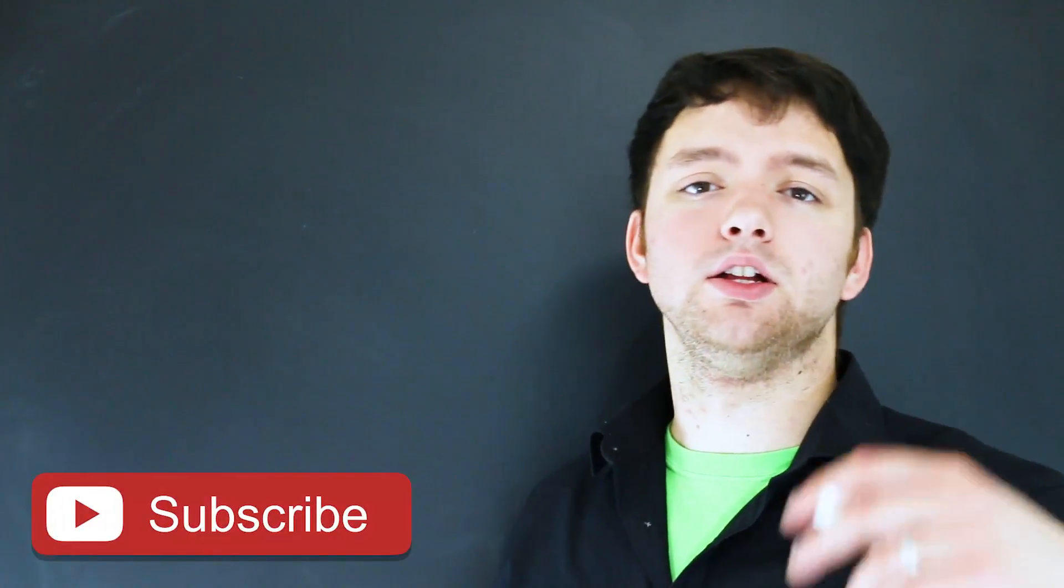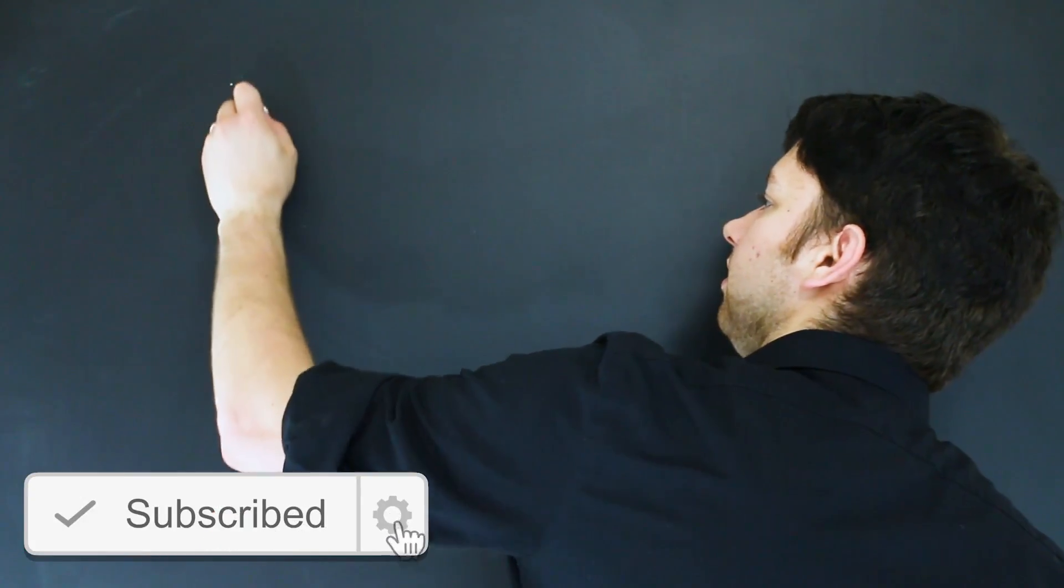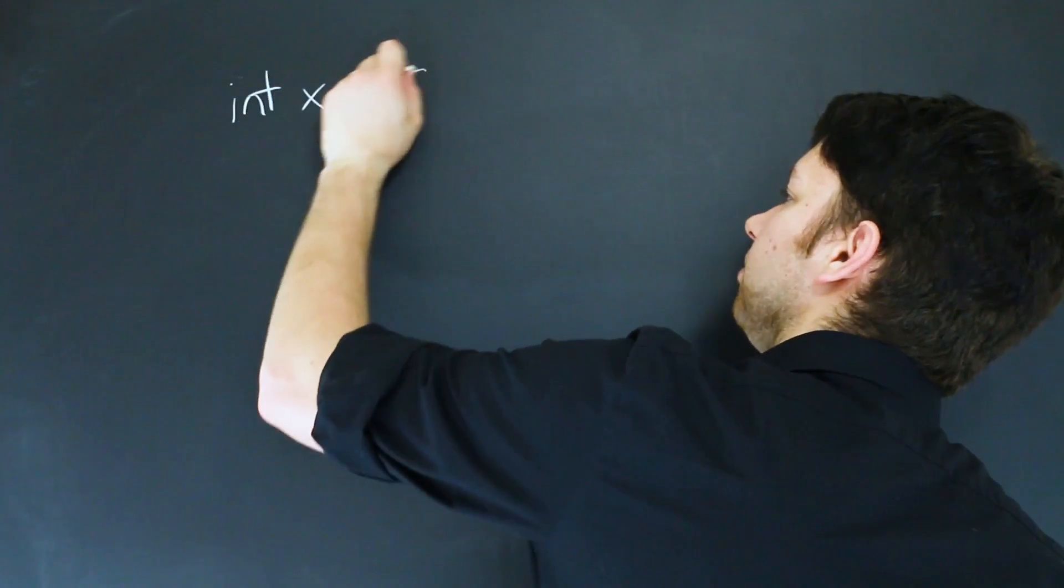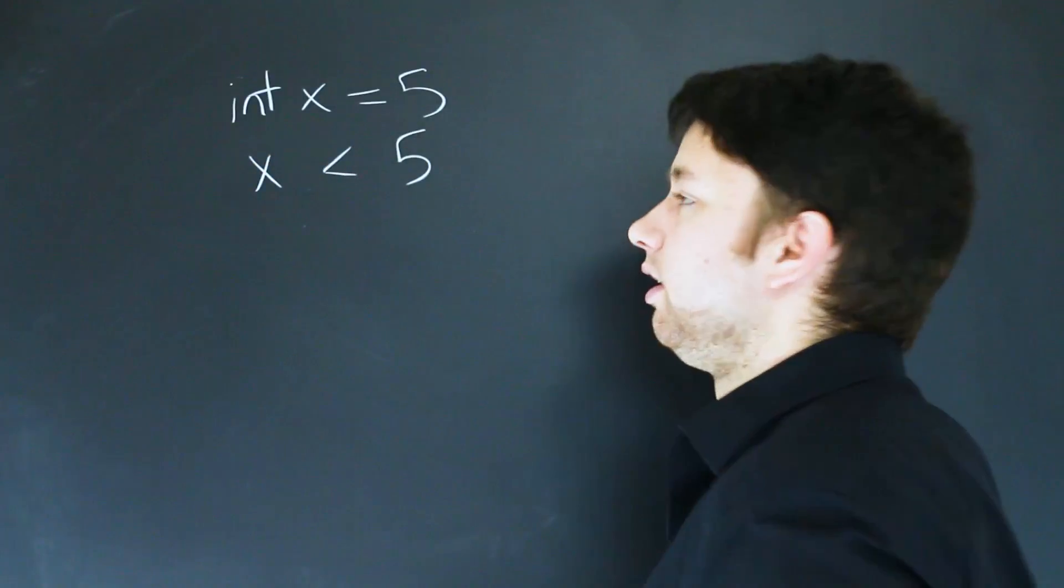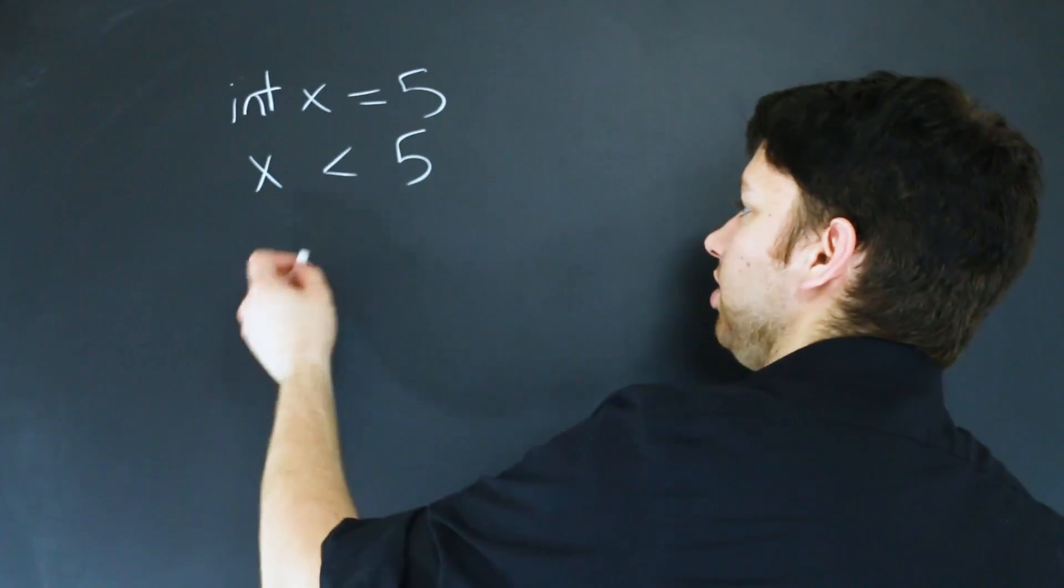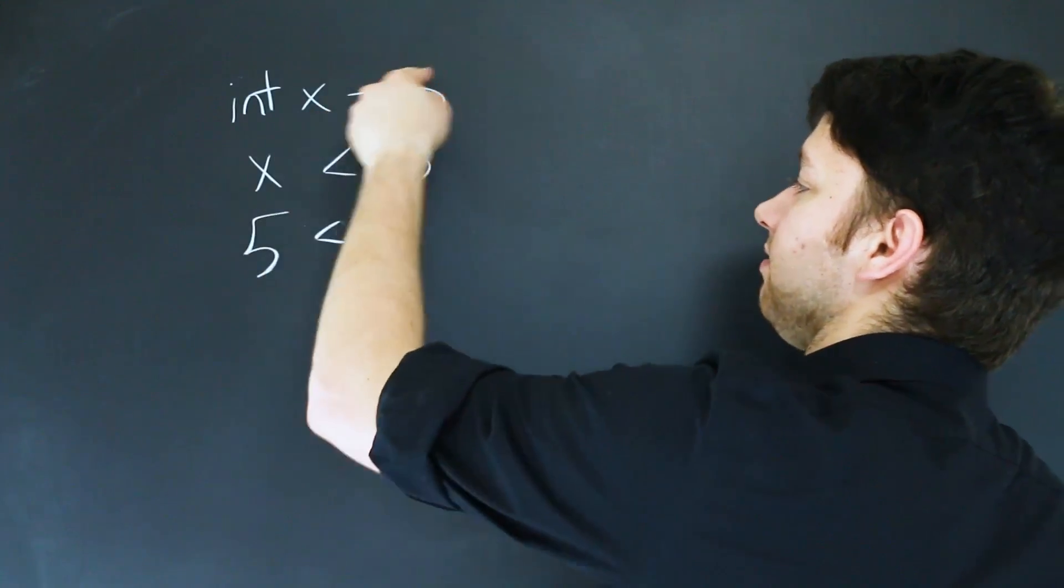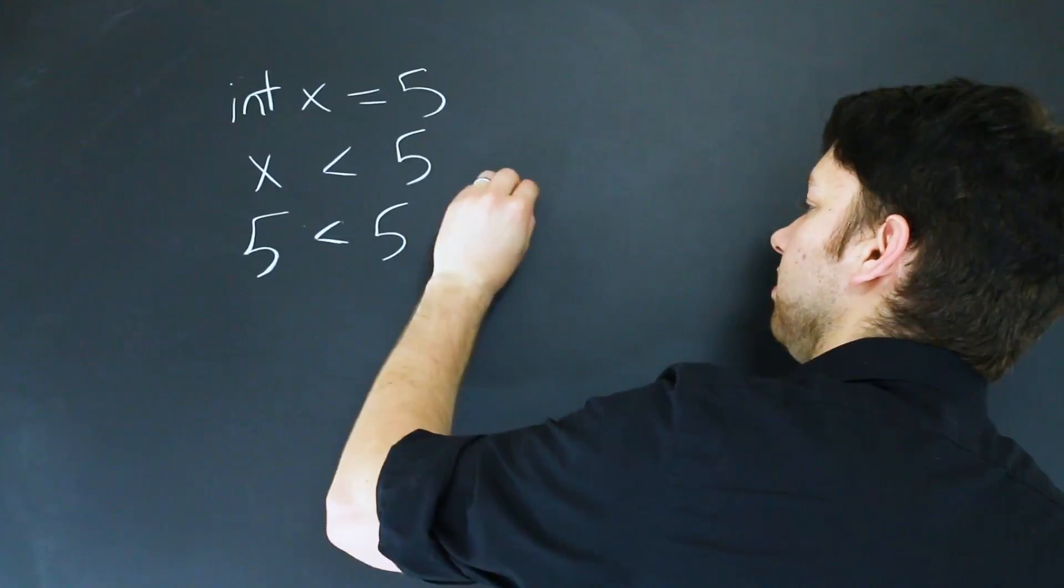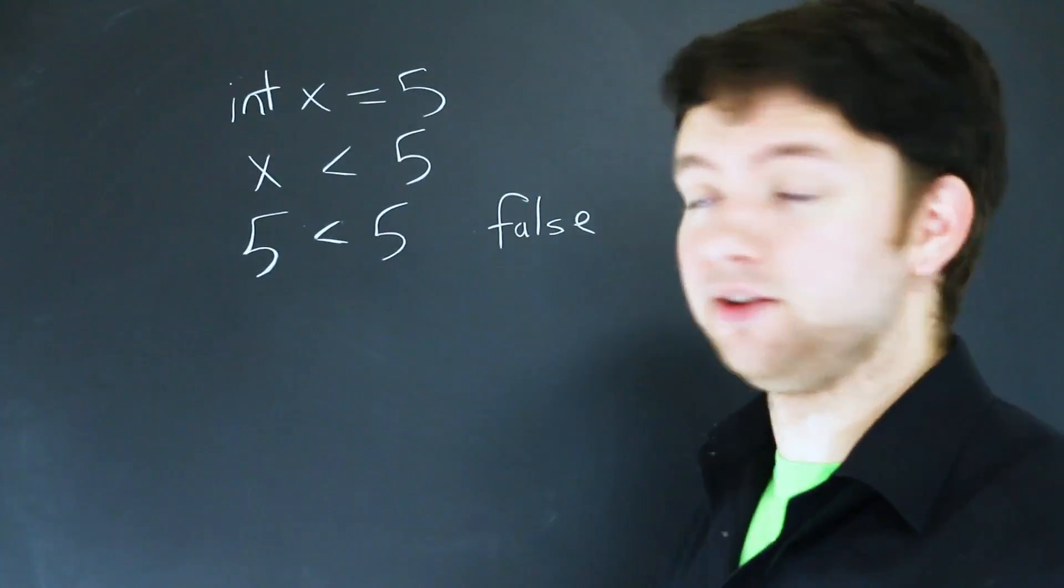As a reminder, we need to know what relational operators are and logical operators. So for example, we could have something like this: int x equals 5, and then we could say x is less than 5. This is really super simple and you can kind of just see it as 5 is less than 5, since the value of x is 5, which is obviously false because they're the same number so one can't be less than the other.